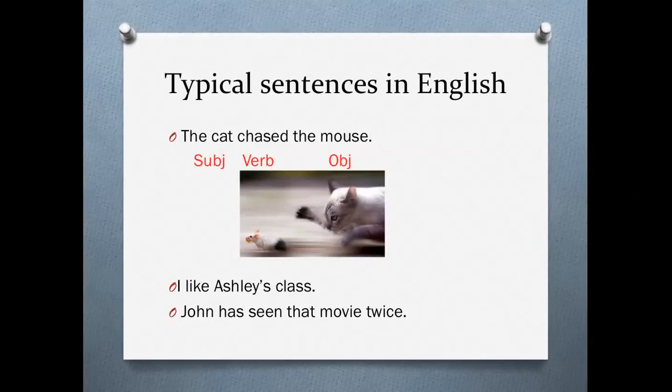First, let's talk about typical sentences in English. A normal sentence in English looks like this: the cat chased the mouse. We have a subject, a verb, and an object. The cat is the subject — it does the action, the verb. The mouse, which is the object, does nothing. The mouse is completely passive. It has no action. It is the cat that has the action. The cat does the chasing.